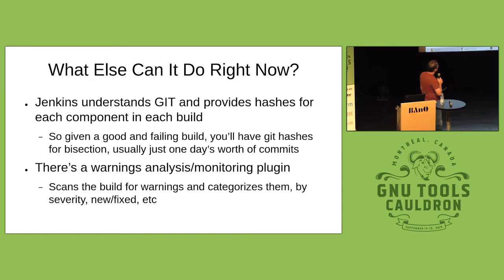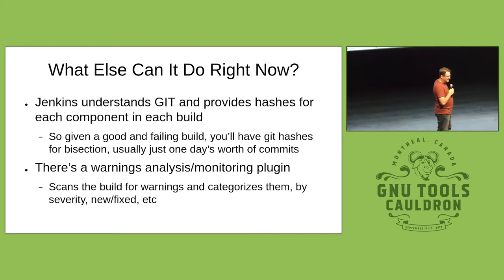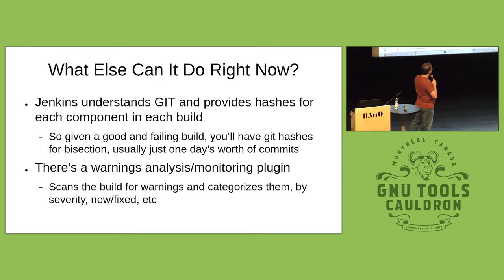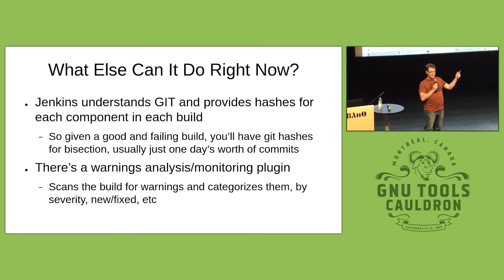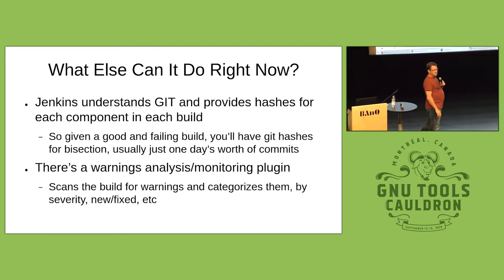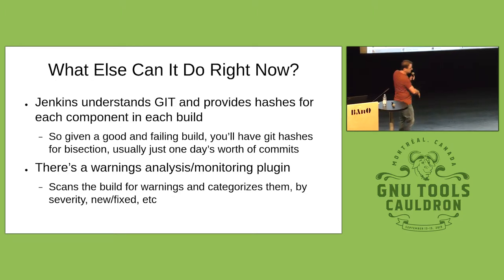What else can it do? It understands git hashes, so when you see a regression, I've got yesterday's hash and today's hash — we're looking at a dozen revisions to check. It makes it very easy to bisect a problem. We're not using it yet, but there's a warning analysis plugin that will scan your builds, categorize all the warnings, and track them over time. It gives you graphs and tells you which ones are serious because of security concerns. So there's other stuff we can do with it that we're not really exploiting right now.